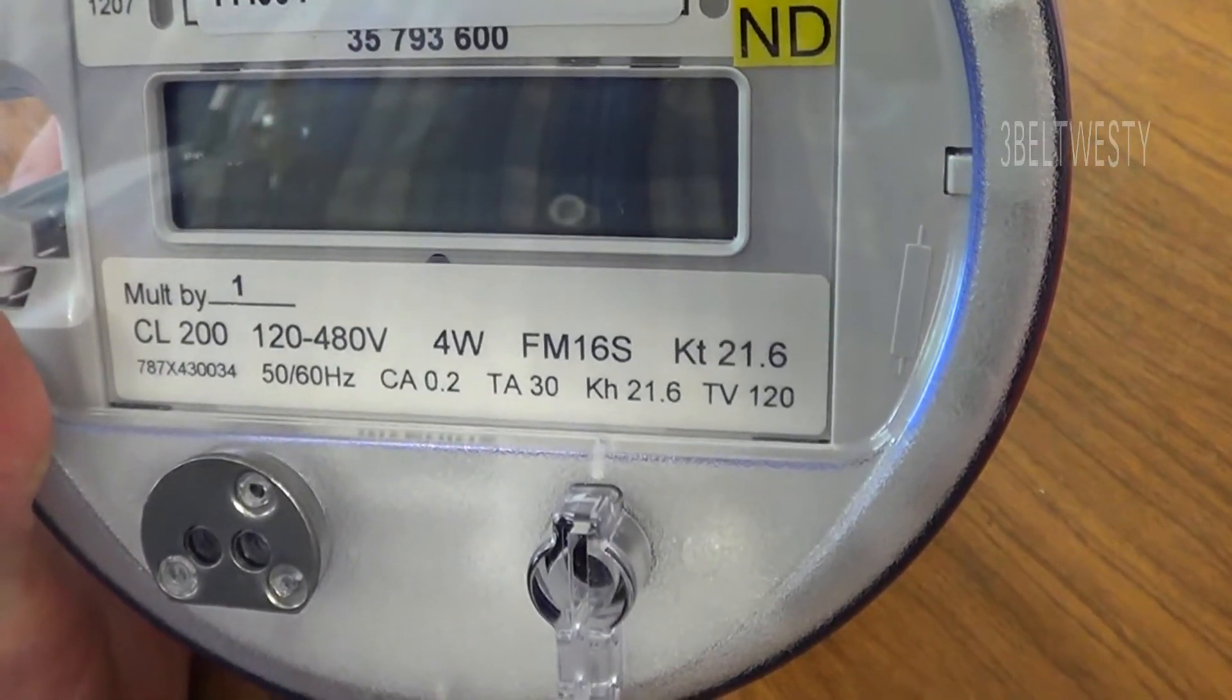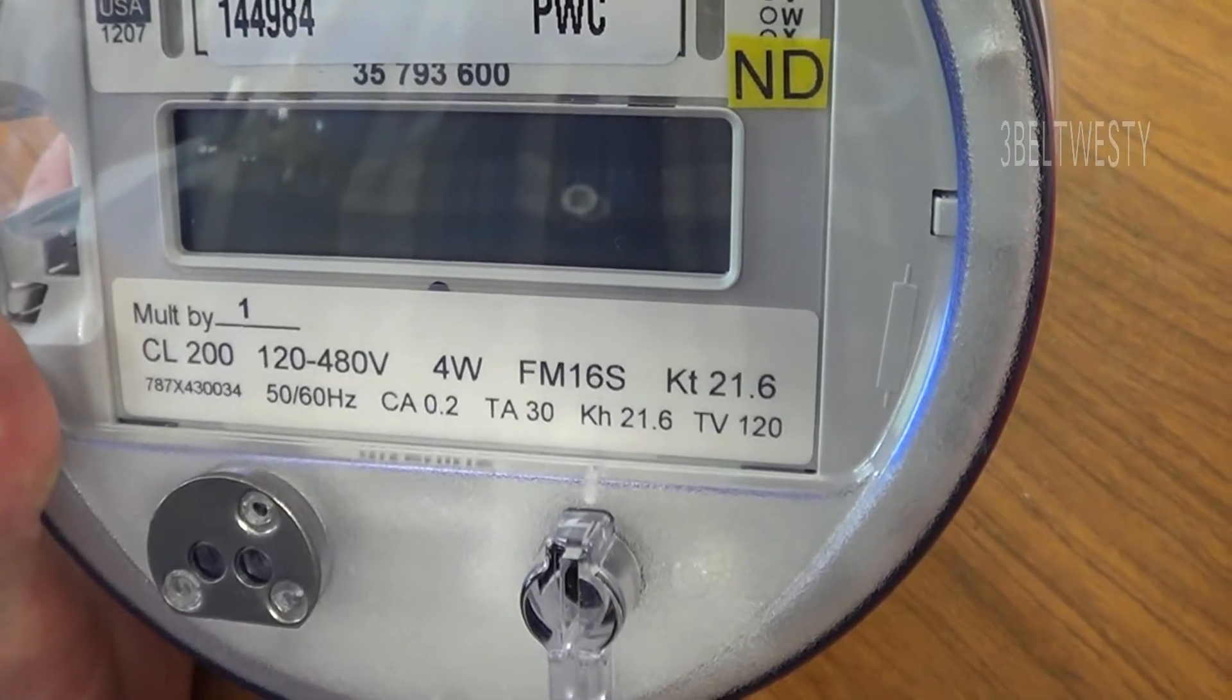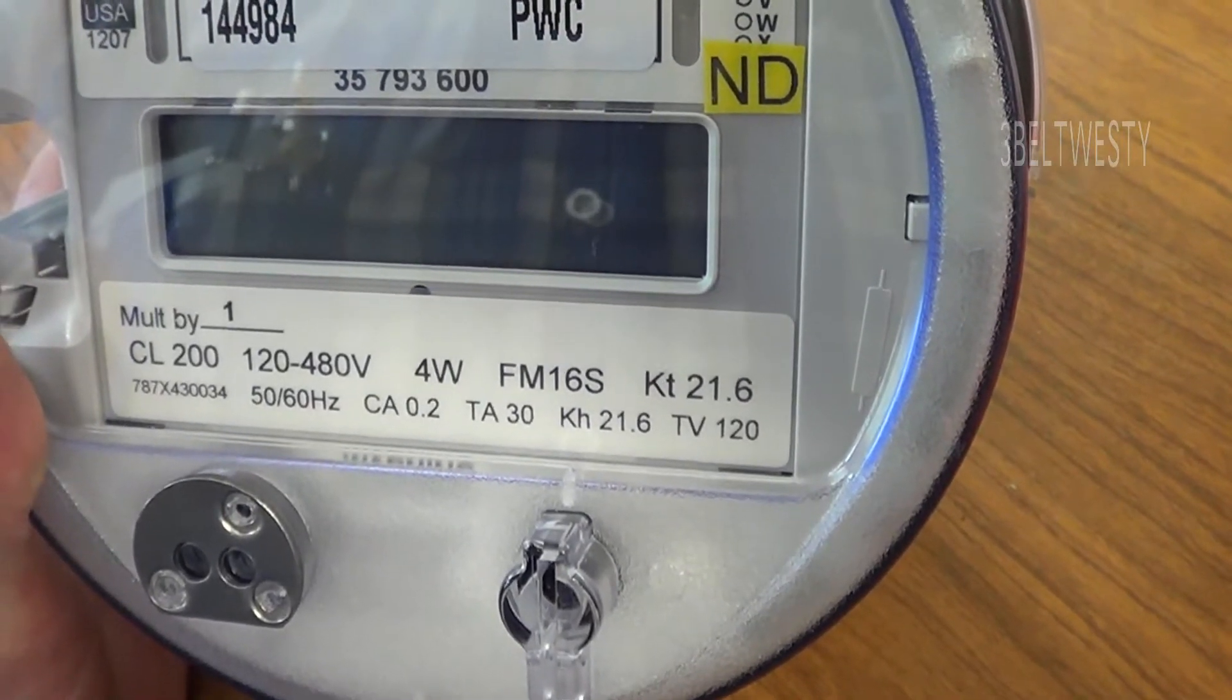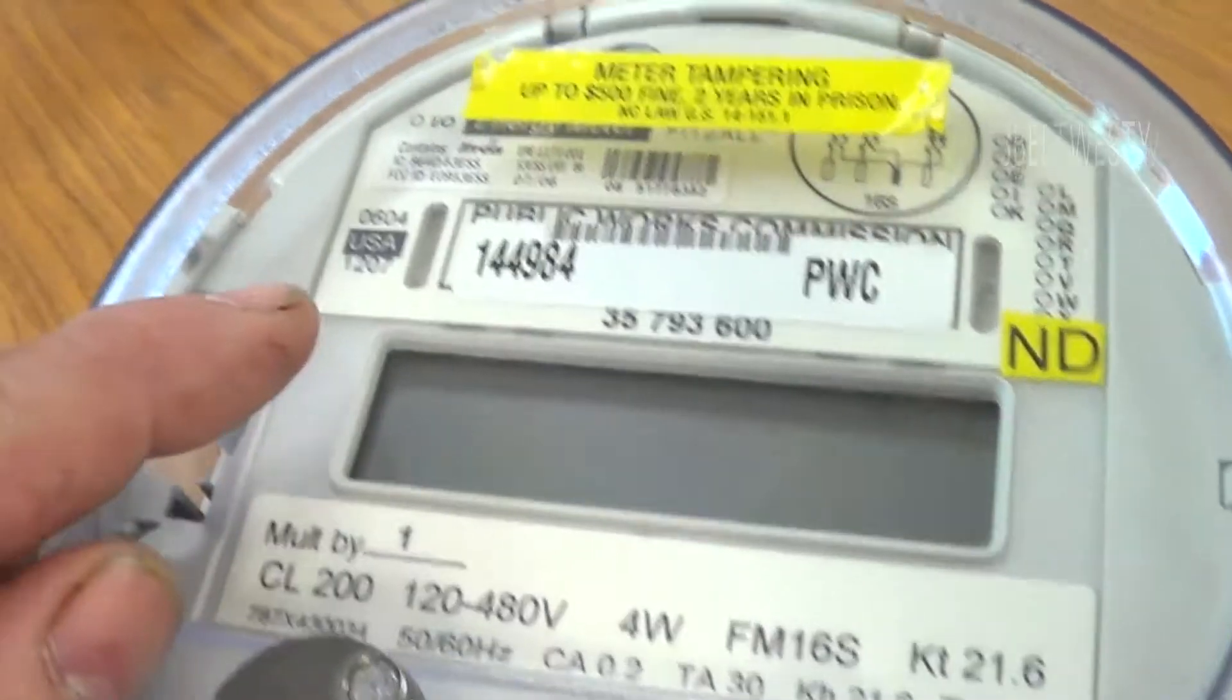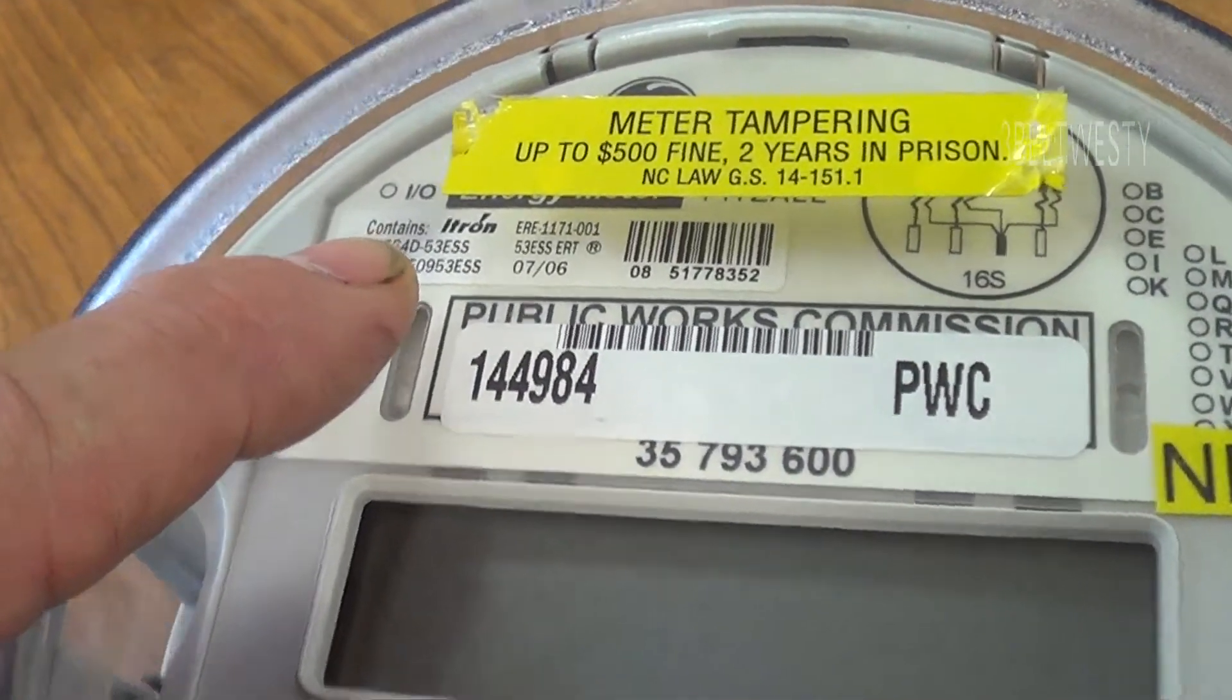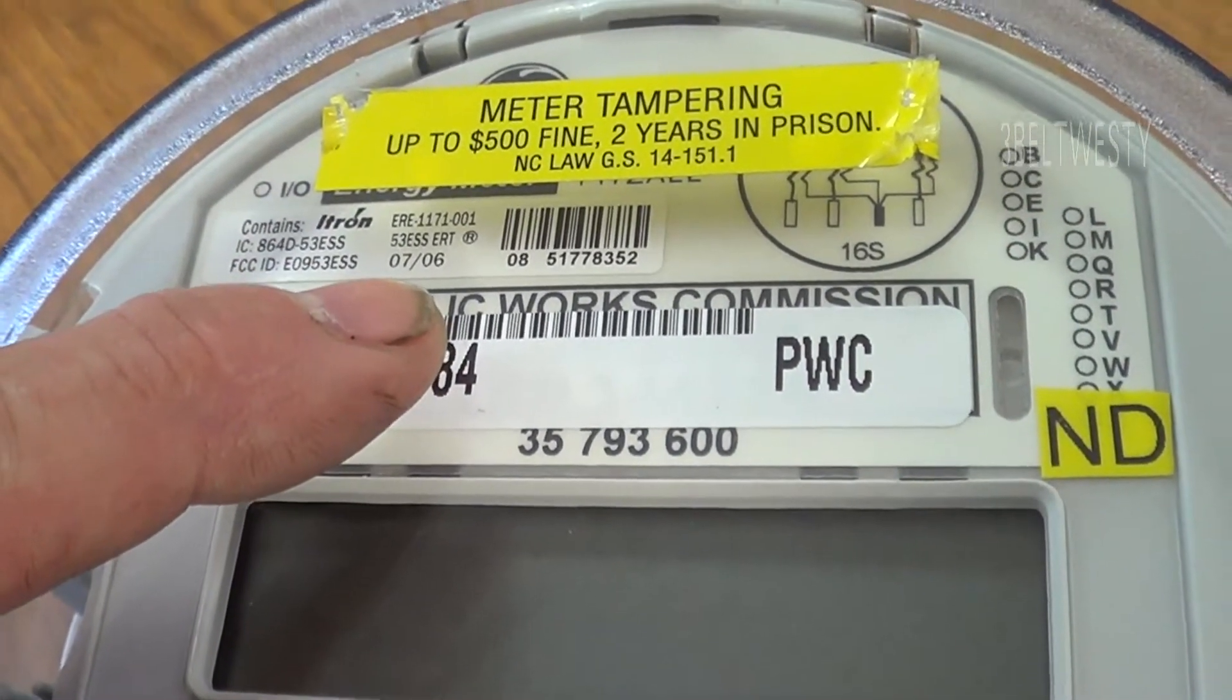This is a class 200 meter which means it has built-in meter shunts for the current four wire form 16s. There's KT 21.6, 50-60 Hertz, test amperes 30. This is the date that's manufactured 1207, there's a software rev and I believe this Itron, the FCC, that's the smart meter gizmo in there.